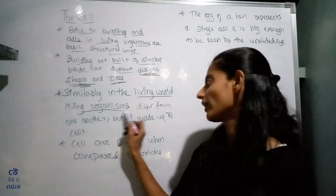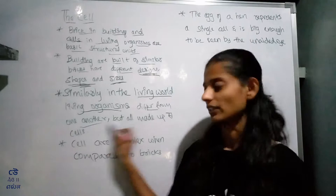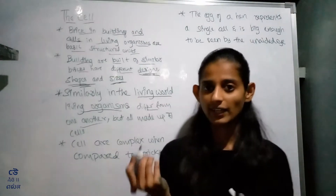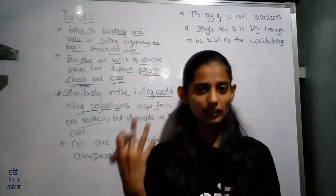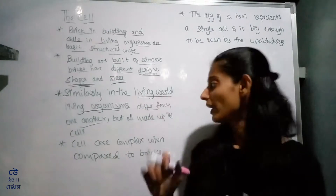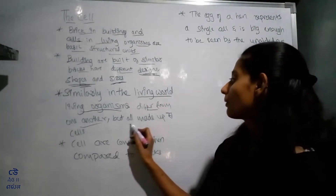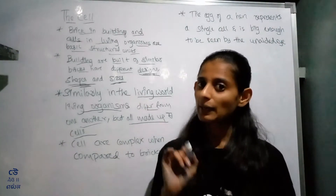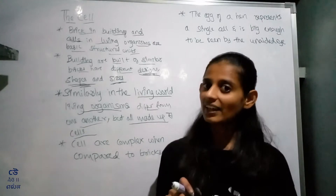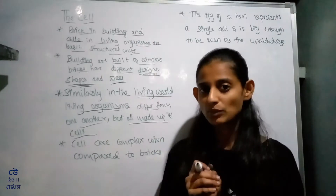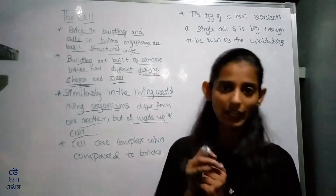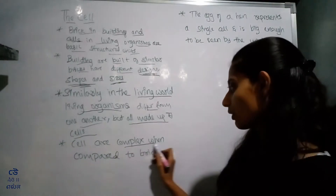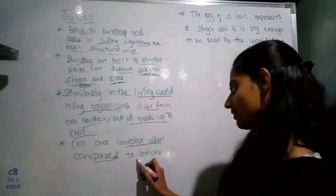That means living organisms differ from one another. One organism and another organism may be different, but all organisms are made up of cells. Cells are complex when compared to bricks.